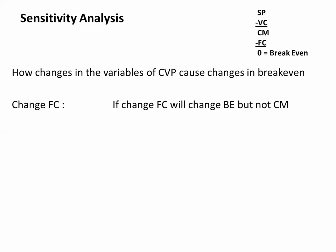If fixed costs change, they will change the break-even, but will not change the contribution margin. If you take a look at the formula, you'll see fixed costs are below contribution margin — they have no impact on it. However, the break-even will change, because your fixed costs divided by your contribution margin determines your break-even point in units. If your fixed costs go up, then your break-even point goes up.